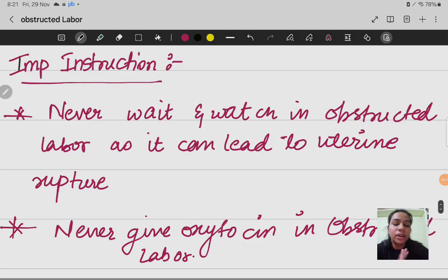There is an important instruction: never wait and watch in obstructed labor as it can lead to uterine rupture. The uterus can rupture and that will increase the risk of maternal mortality.